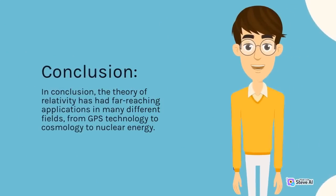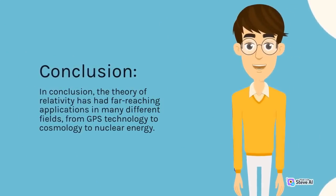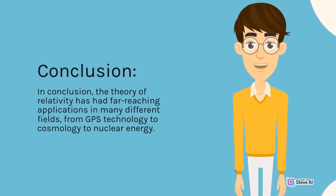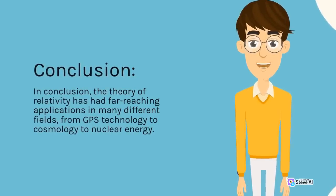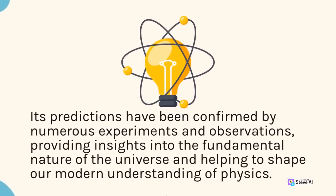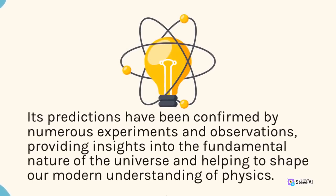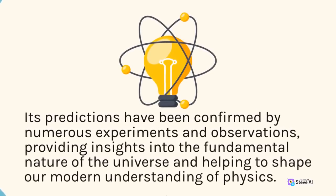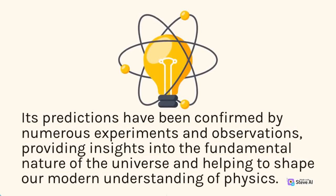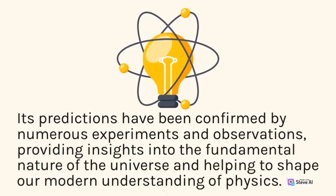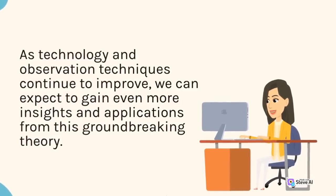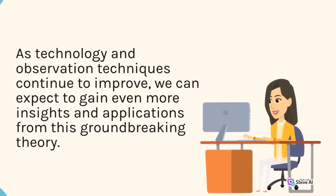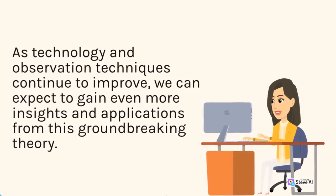Nuclear Energy: The theory of relativity also played a role in the development of nuclear energy. It predicts that a small amount of mass can be converted into a large amount of energy, as demonstrated by the famous equation E = mc². This equation has been applied in nuclear reactors and weapons, where the conversion of a small amount of mass into energy can produce a tremendous amount of power. In conclusion, the theory of relativity has had far-reaching applications in many different fields, from GPS technology to cosmology to nuclear energy. As technology and observation techniques continue to improve, we can expect to gain even more insights and applications from this groundbreaking theory.